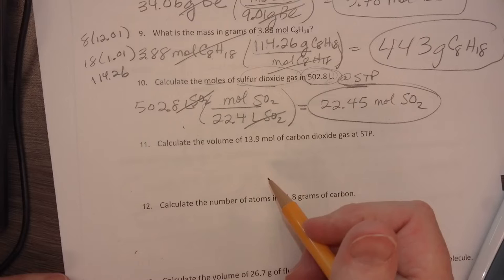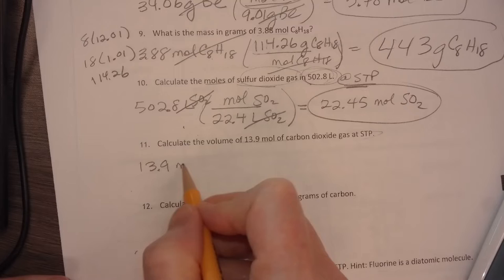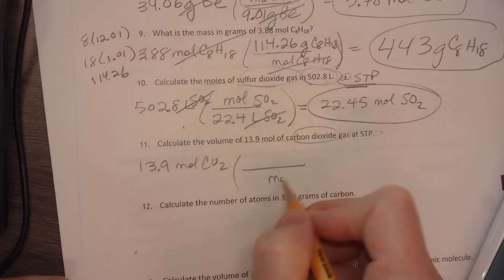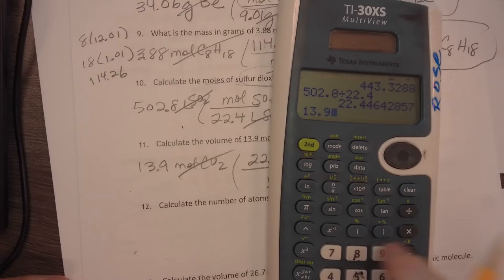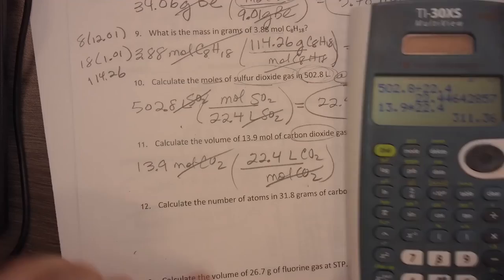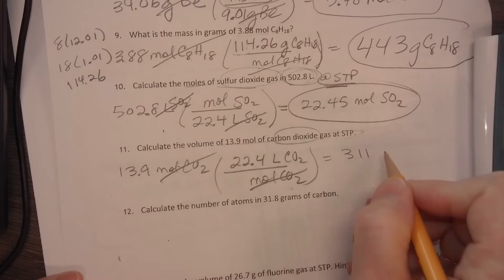Now it says calculate the volume of 13.9 moles at STP. So if I have 13.9 moles of carbon dioxide at STP, I know every mole of carbon dioxide has a volume of 22.4 liters. Kind of cool. Moles divide out. 13.9 times 22.4 is 311.36. I need three significant figures. So we'll just say 311 liters of CO2.